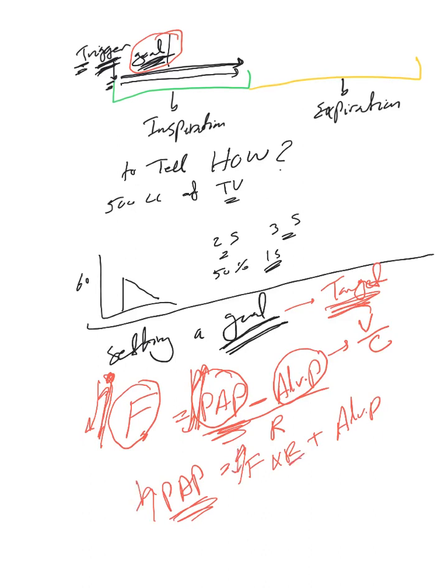The ventilator does not control the resistance or alveolar pressure. Remember this - it controls the proximal airway pressure and the flow. That's what the ventilator controls.